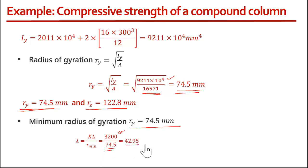Now we can calculate lambda, the effective slenderness ratio, which is KL divided by R minimum. KL equals 3200 mm and R minimum is 74.5 mm, giving lambda = 42.95, approximately 43. This is a non-dimensional number.